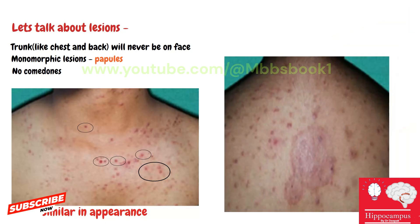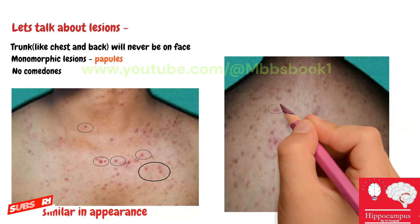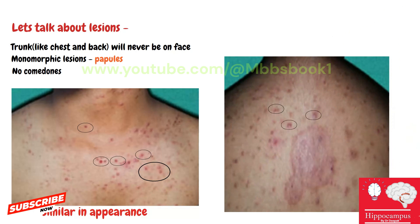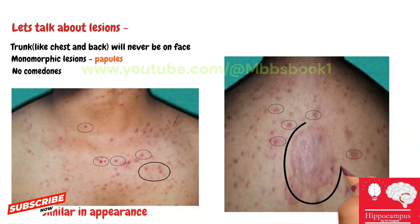Let's take a look at another picture. There are multiple monomorphic papules on the back. The annular lesion in the center is tinea, for which topical steroids were wrongly applied by the patient.